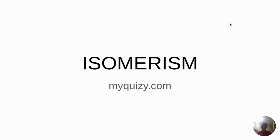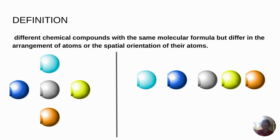We have to understand the word 'iso'. The word iso always means the same. The same idea applies to the word isotopes. When we talk about isotopes, these are elements with the same atomic number but different in their mass numbers. For example, chlorine always has atomic number 17, but it has mass numbers 35 and 37. So when we use the word isomerism, we understand this is a compound with the same molecular formula but always different in their structural form or in the spatial orientation of the atoms.